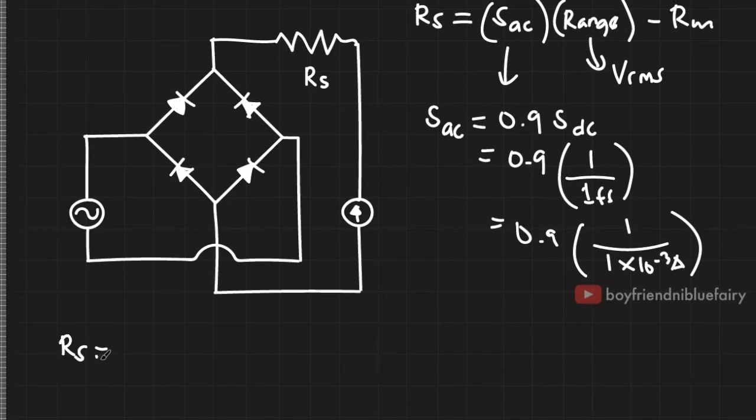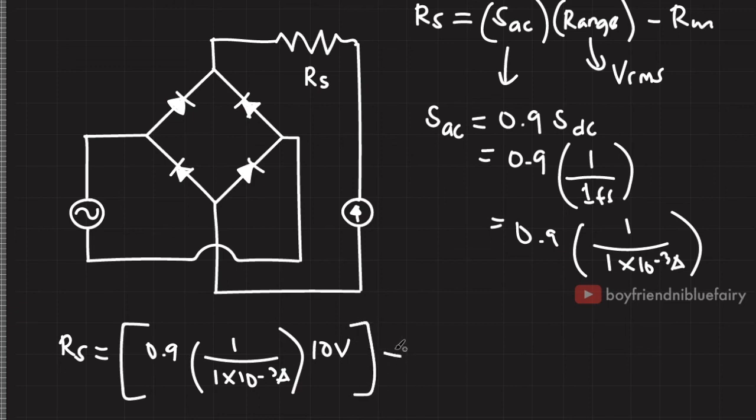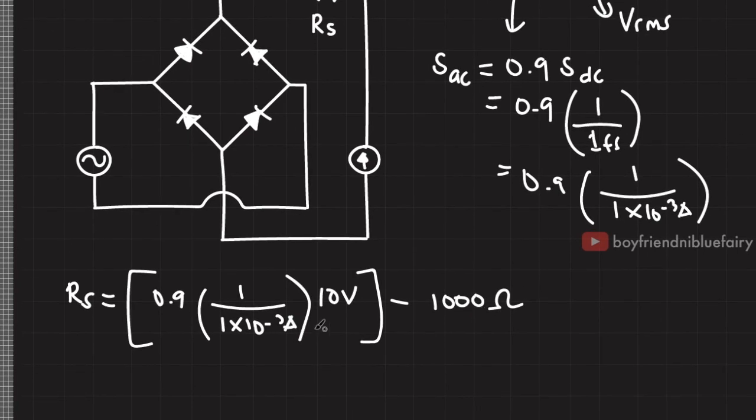R sub S is equal to, I'll just directly plug this back to the above equation. So I'll have 0.9, 1 over 1 mA, times the range which is the VRMS and based on the given, it is equal to 10 volts minus the meter resistance which is 1k ohm. And plugging in the values, this results to R sub S equal to 8,000 ohms.